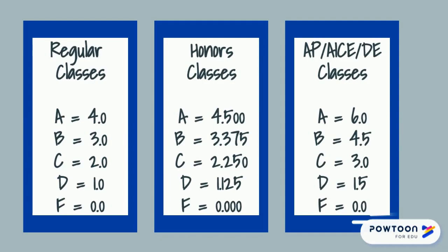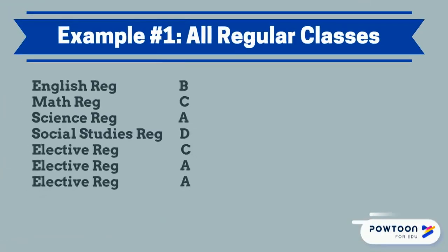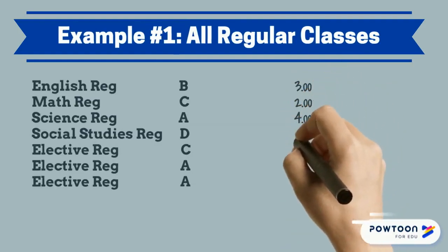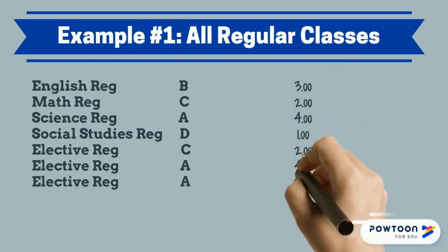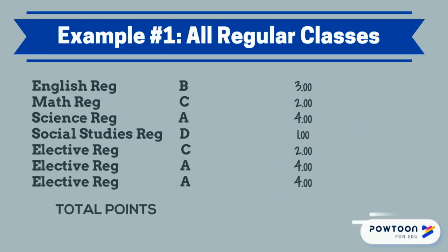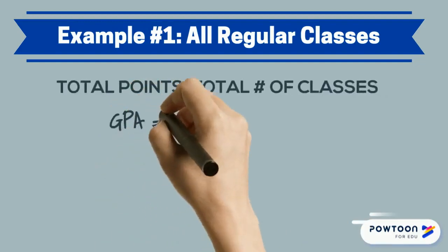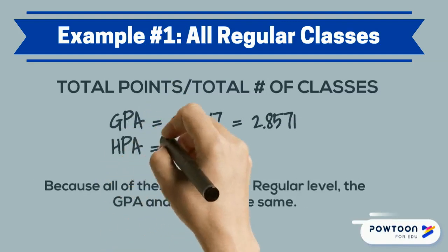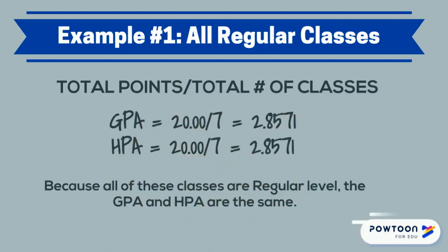Let's look at a few examples. Here is a student who has taken all regular classes this semester. Using the four-point scale, we convert each letter grade to points, then we add the points together. In this case, the student has earned 20 points in seven classes; when we divide 20 by 7 we get a GPA of 2.8571. Because all of these classes are regular level courses, the GPA and the HPA are the same.